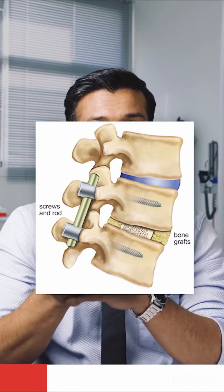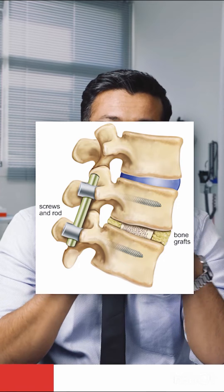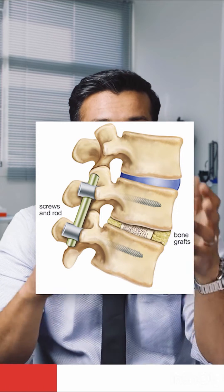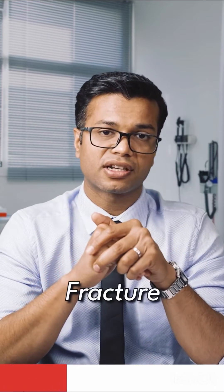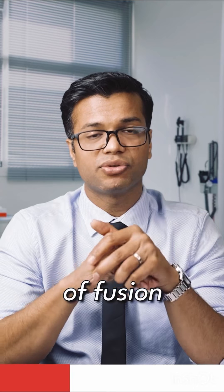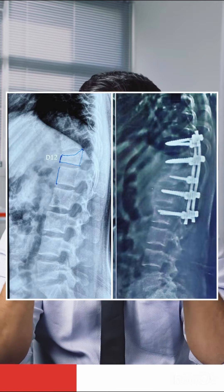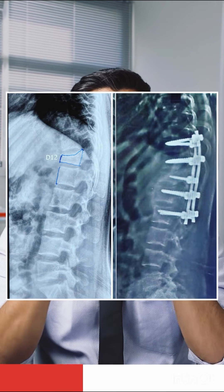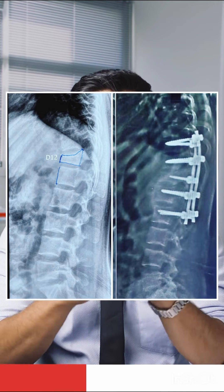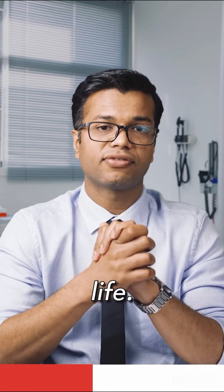Fusion, where screws and rods are put across a particular segment to achieve a bony bridge or fusion across that segment. Fixation for fracture is again a type of fusion where screws and rods are put across the fractured segment of the spine to hold it in that position and alignment for the rest of your life.